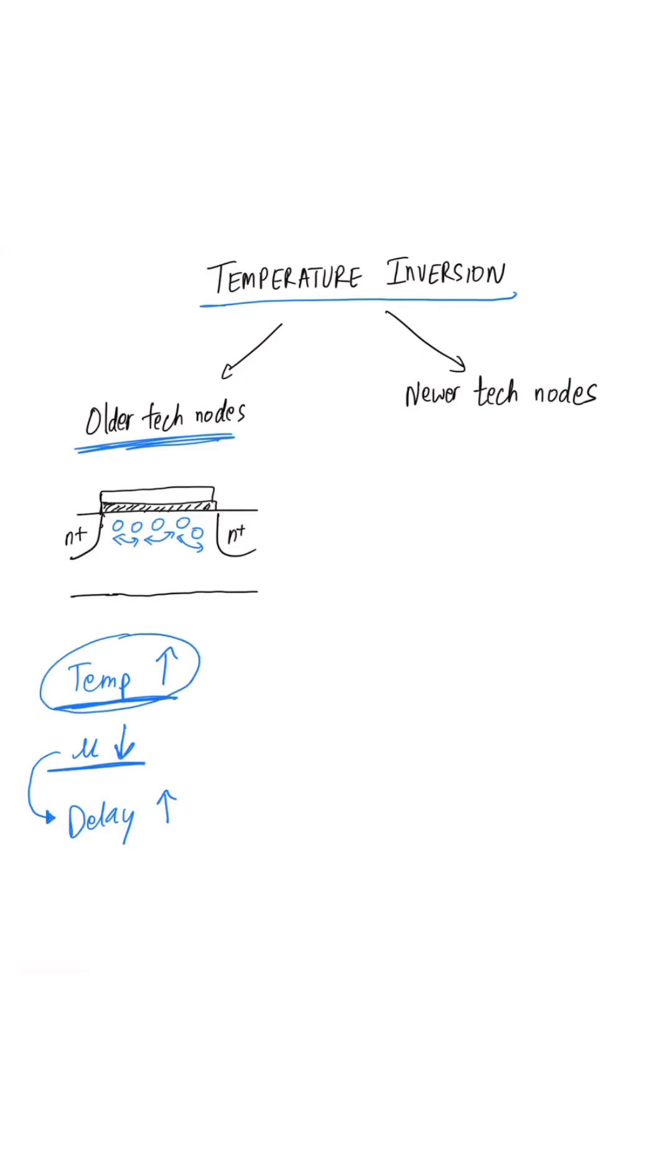At higher temperatures, our transistors were slower. So for setup timing analysis, our worst timing corner was more likely to be at a higher temperature like 100°C or 125°C.